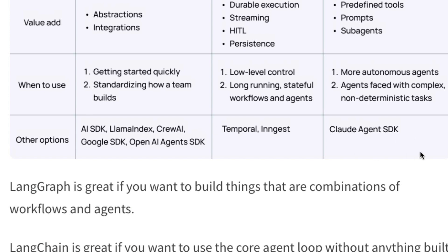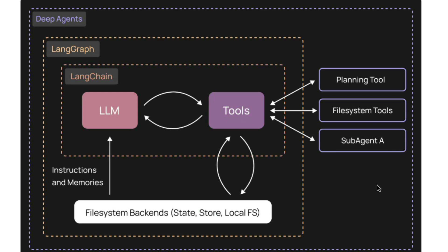Deep Agent is equivalent to the Claude Agent SDK. If you look at the Deep Agent ecosystem, you've got LLMs with access to a bunch of tools, and the LLM also has access to the Langchain ecosystem — so you can bring in RAG from Slack or Google Doc ingestion. Langgraph sits on top to help design low-level workflows in a graph structure. And Deep Agent sits on top of that, with access to the planning tool, file system, sub-agents A, B, and C, and a detailed system prompt encompassing everything together.